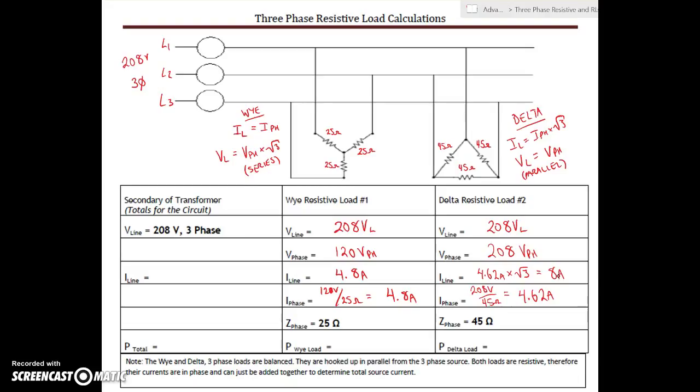So now we can keep track of all our currents. The current outside and inside of this wye circuit is 4.8 amps. Looking at the delta circuit, the current inside the circuit is 4.62 amps and the current outside of the circuit on the line is 8 amps.